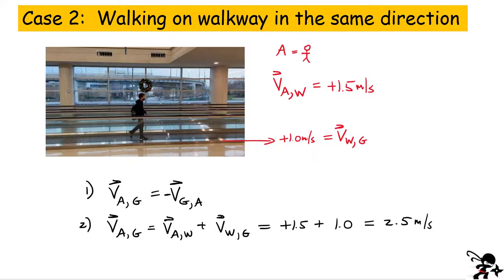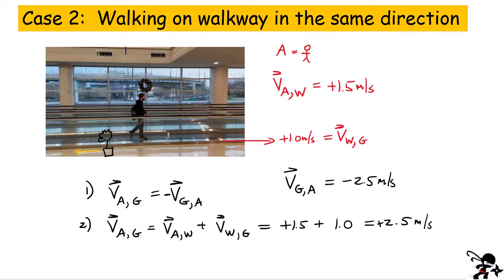Andy's velocity relative to the ground is +2.5 m/s. The purpose of these walkways is to move people faster — and indeed he's moving faster than his walking speed alone. Using Equation 1, the velocity of the ground relative to Andy is -2.5 m/s, meaning he sees the flower pot and the wreath moving to the left at 2.5 m/s.